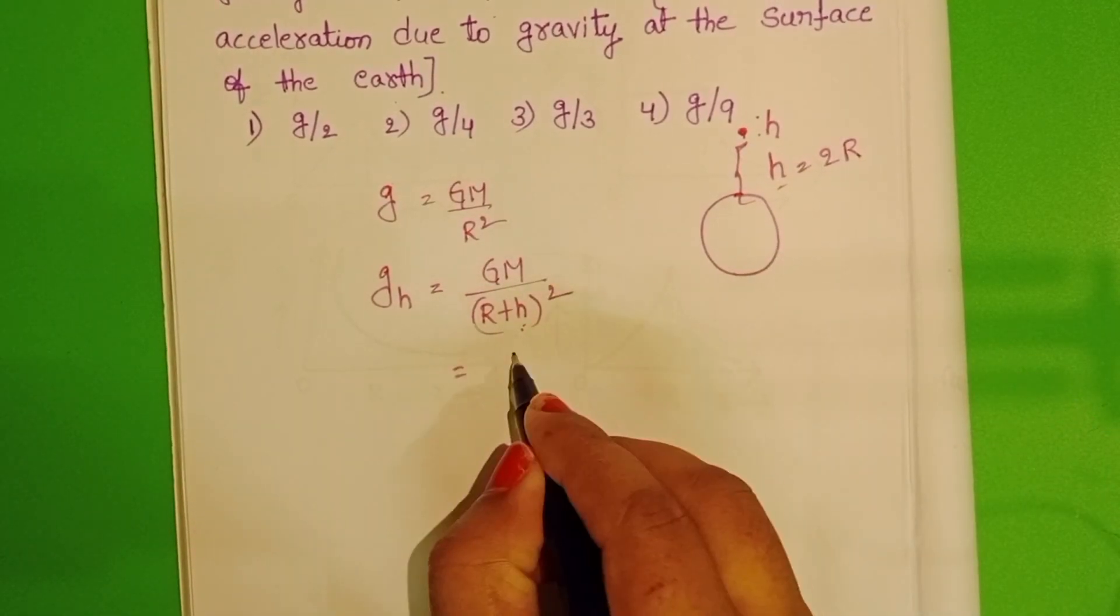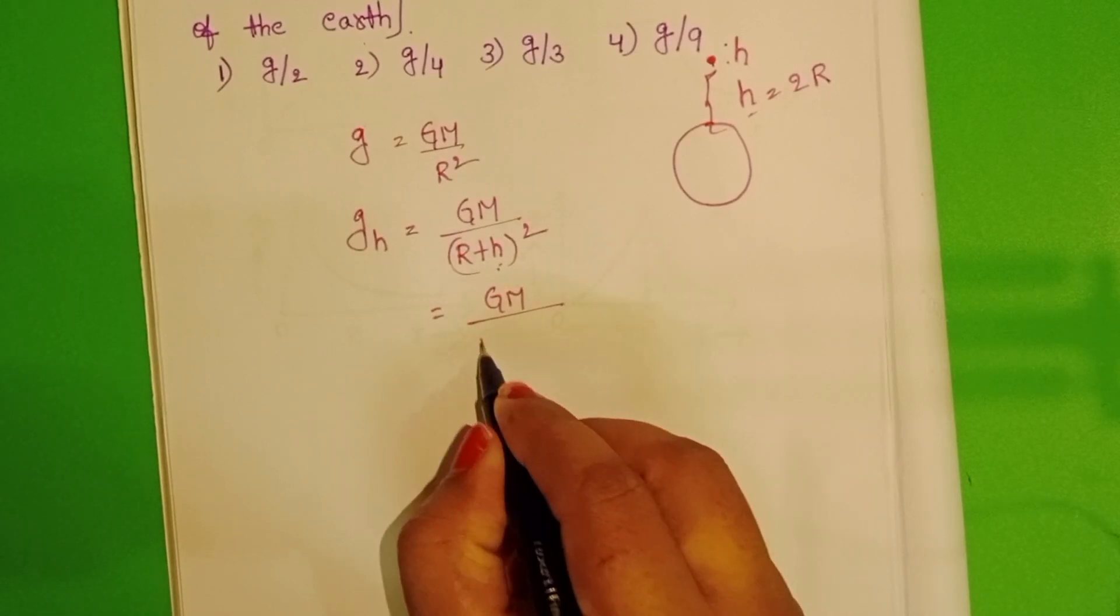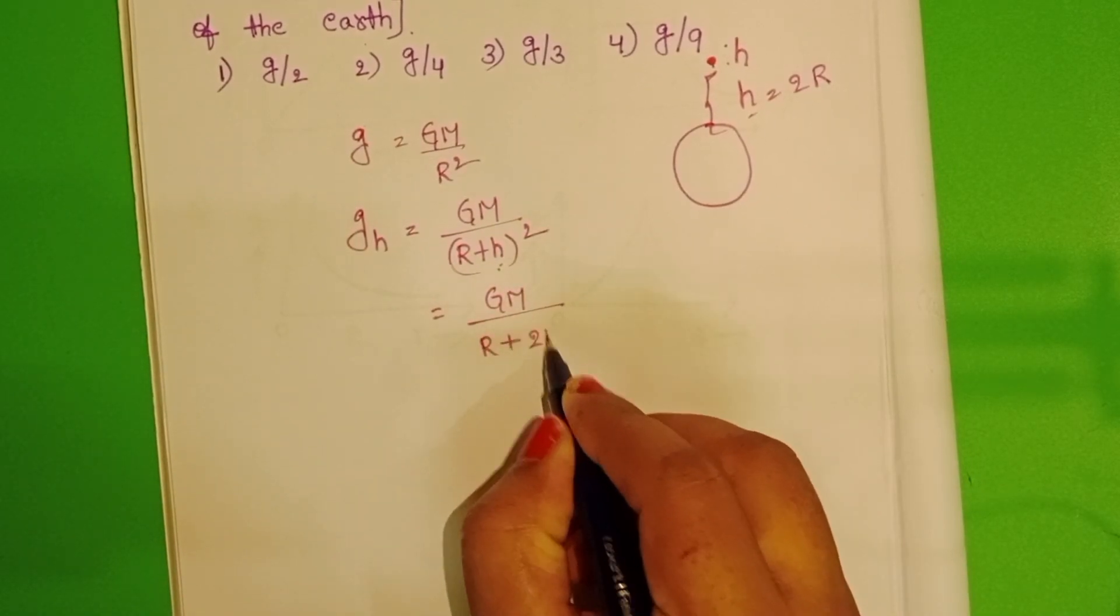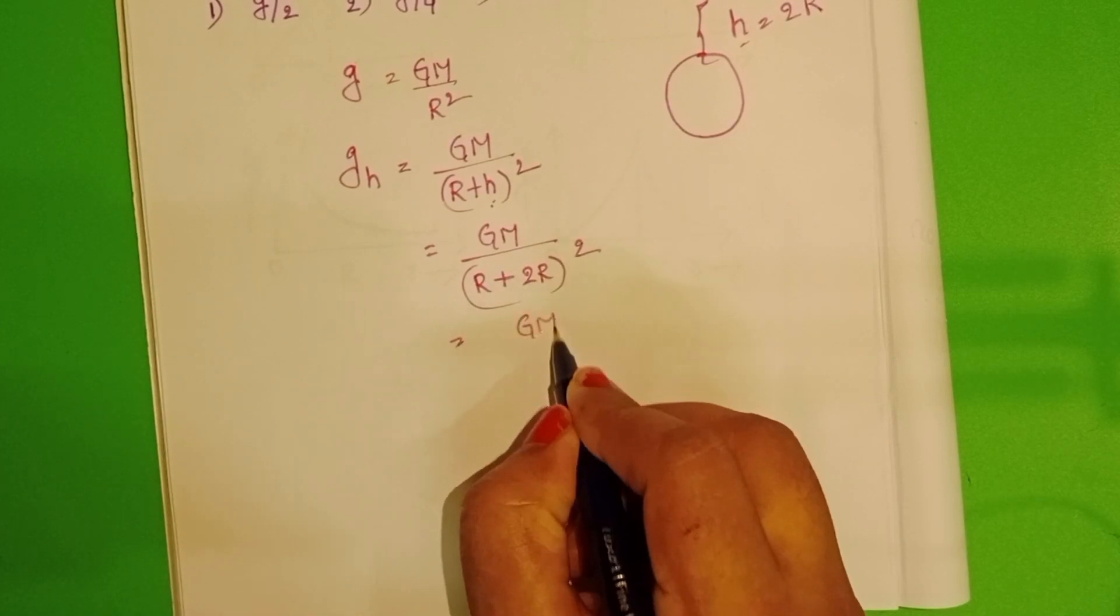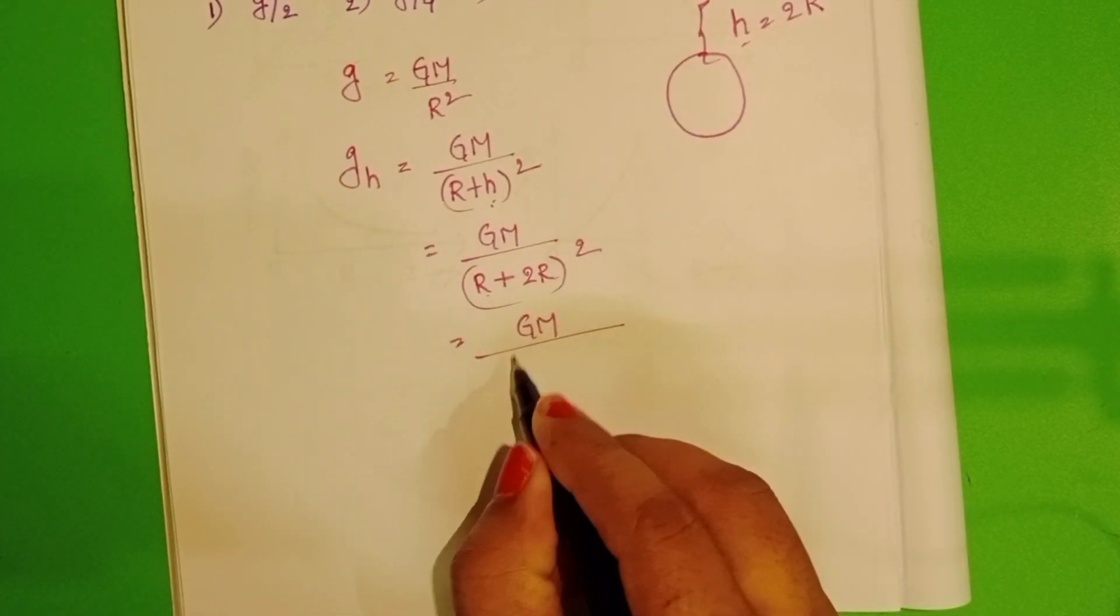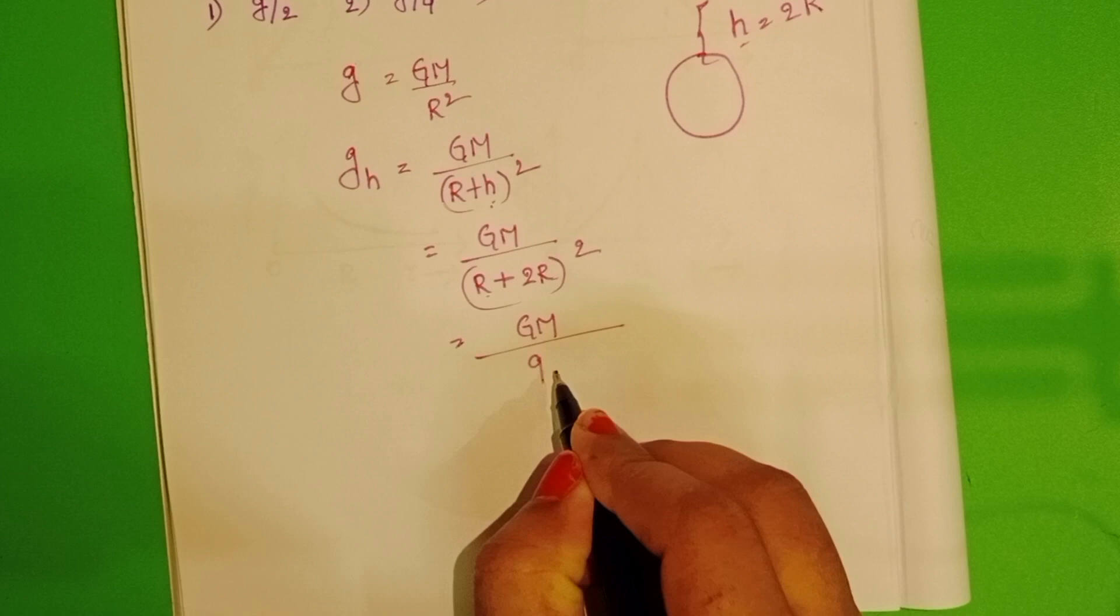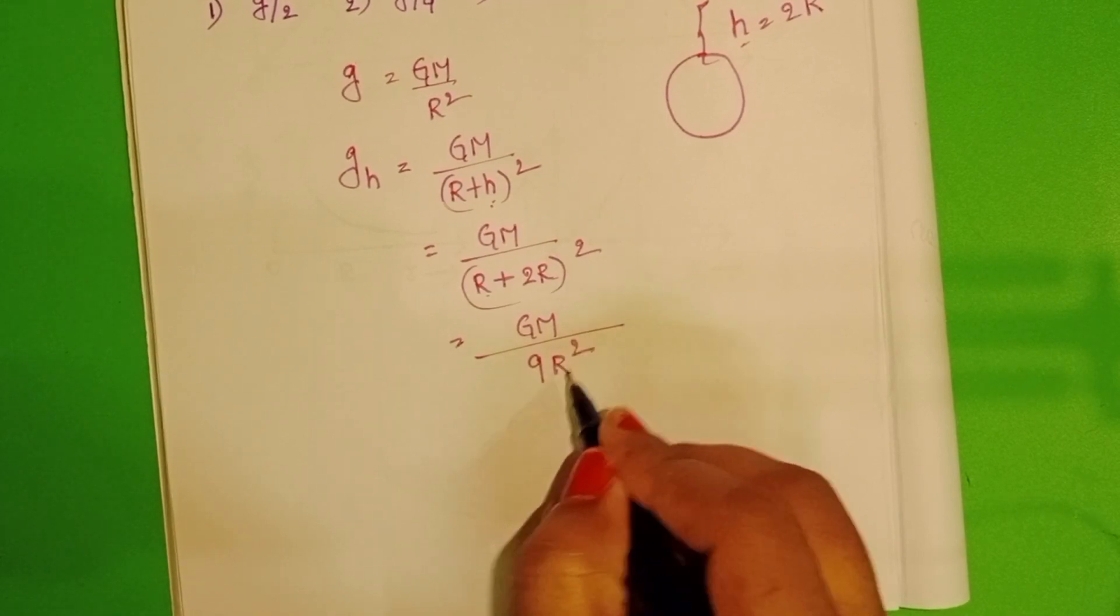Substitute here: GM/(R+2R)². GM/(3R)² becomes GM/9R².